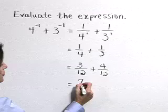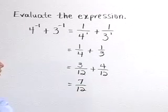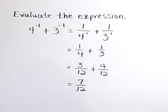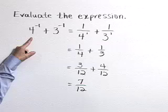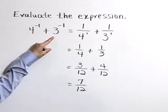Now adding the numerators, we get a result of 7 twelfths. So after evaluating the expression 4 to the negative 1 plus 3 to the negative 1, we get 7 twelfths.